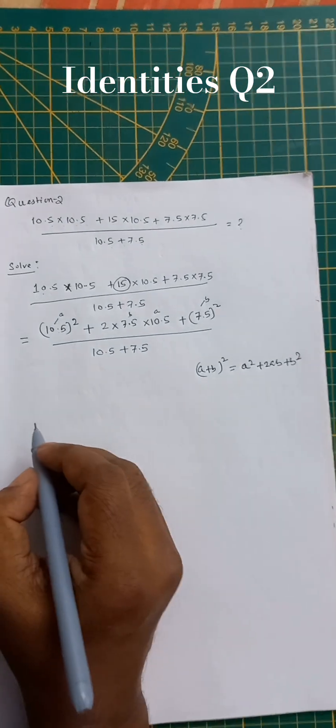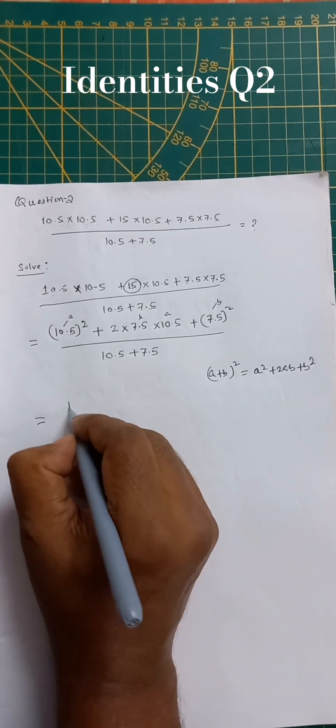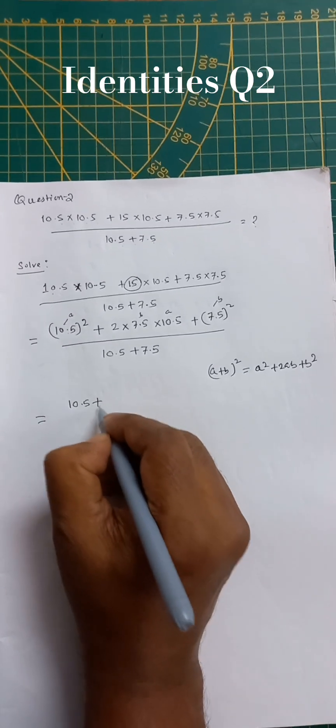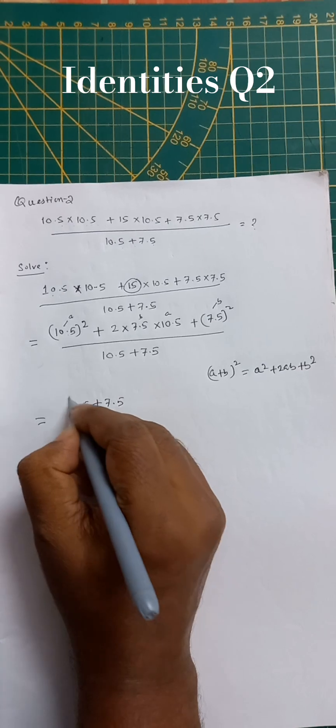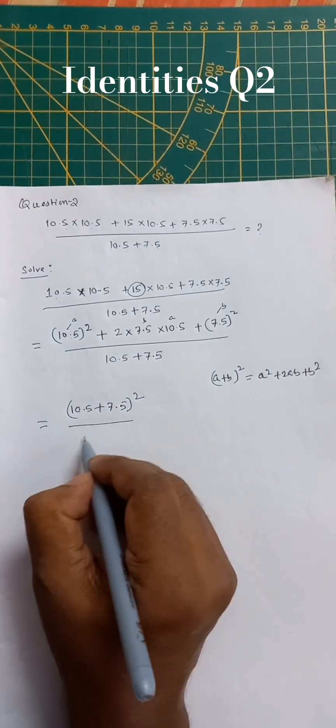So how we can write now: 10.5 plus 7.5 whole square for the above equation. Below is 10.5 plus 7.5.